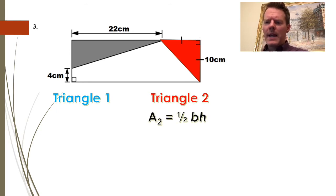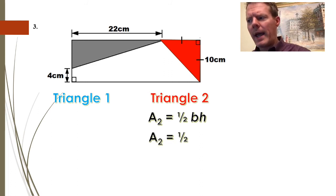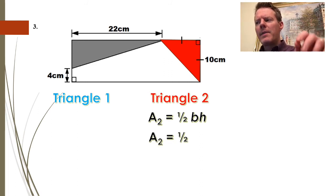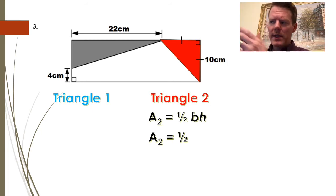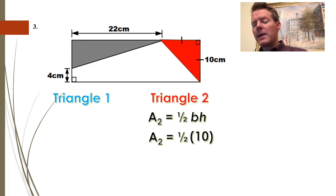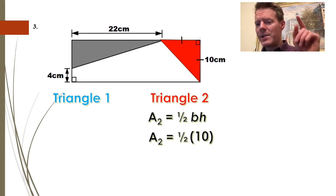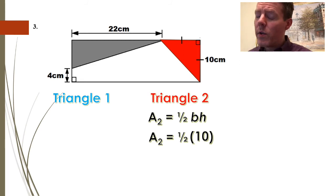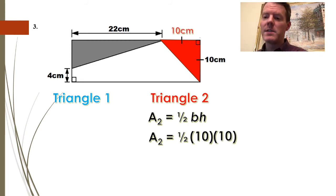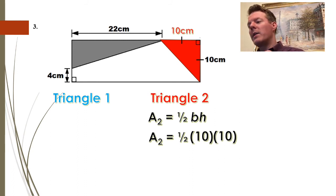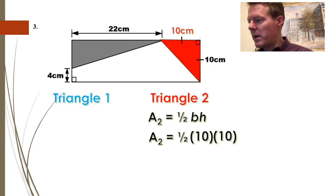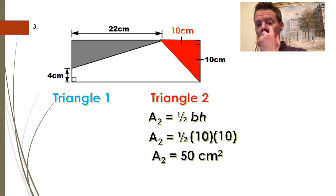I'll do triangle two first since it's a bit easier. The area formula is the same for all triangles: one half base times height. One of the sides is 10, and the little hash marks on the corners mean those sides are the same length, so the other side is 10 as well. So the area is one half times 10 times 10 — 10 times 10 is 100, so half of that is 50 square centimeters for the red triangle.